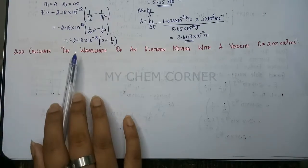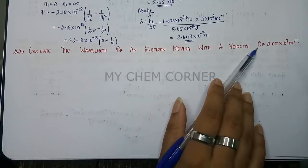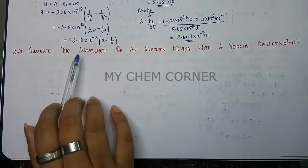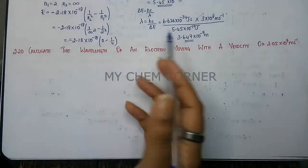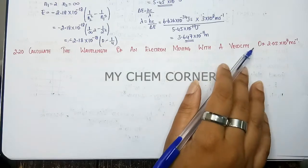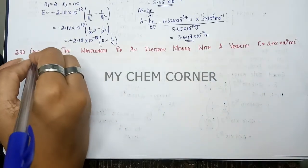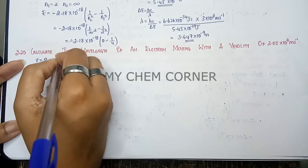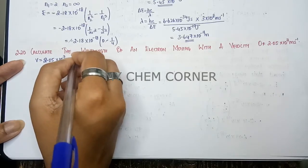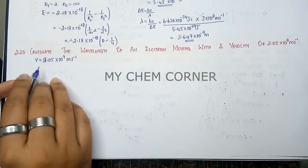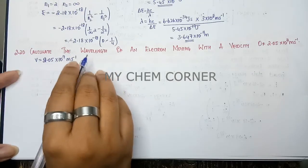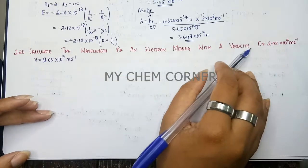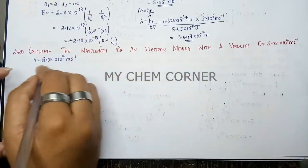Question number 2.20: calculate the wavelength of an electron moving with a velocity of 2.05×10⁷ meters per second. Velocity is given, and we have to find the wavelength. It is a simple de Broglie's equation because velocity is given to us. The velocity is 2.05×10⁷ meters per second, and we need to find the wavelength using de Broglie's equation, which gives the relationship between wavelength and velocity.